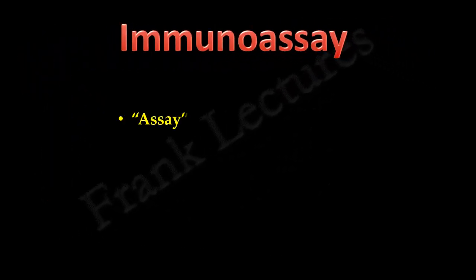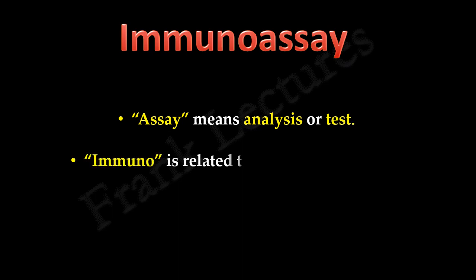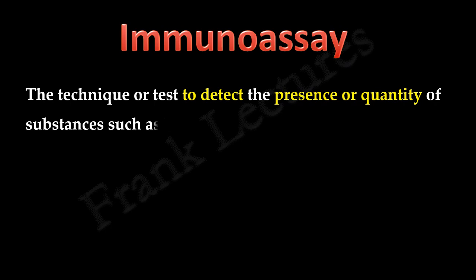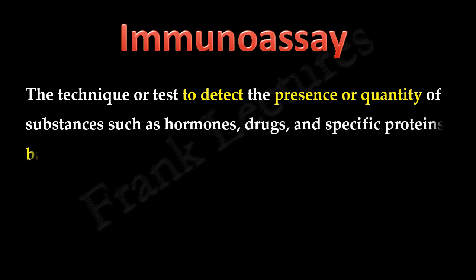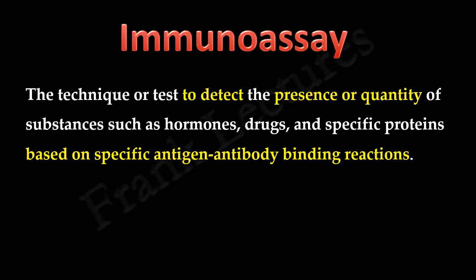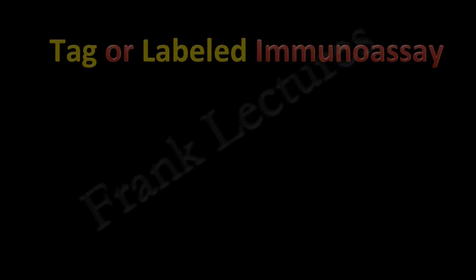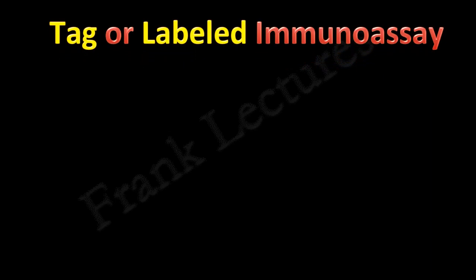Assay means analysis, or simply a test. The term immune reflects that these tests are related to our immune system and its mechanism of action. Immunoassay can be defined as the technique or test to detect the presence or quantity of substances such as hormones, drugs, and specific proteins, based on specific antigen-antibody binding reactions. These substances can act as antigen or antibody. The next question is: what do we mean by tagged or labeled immunoassay?